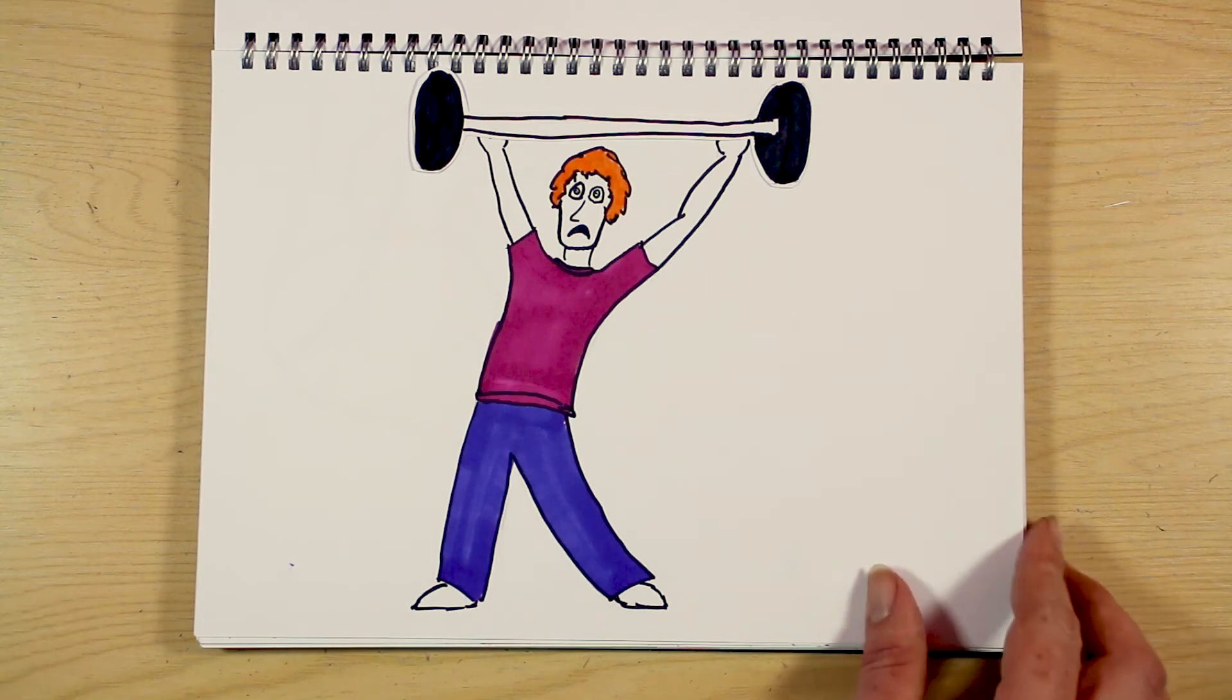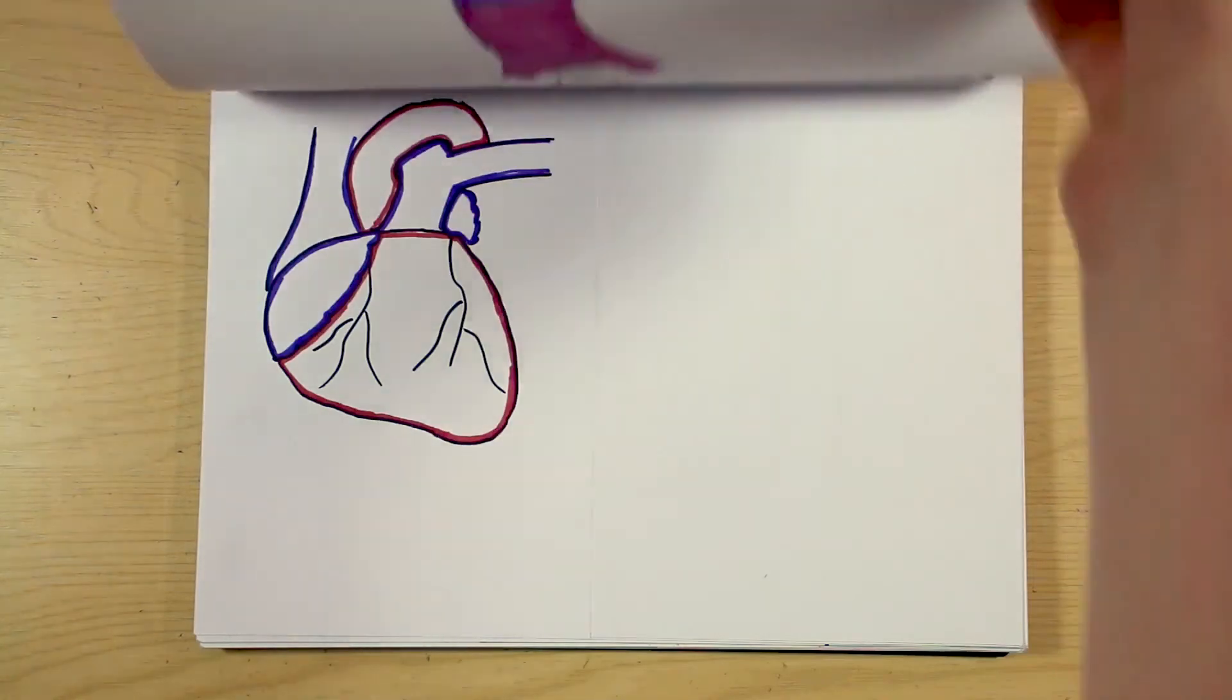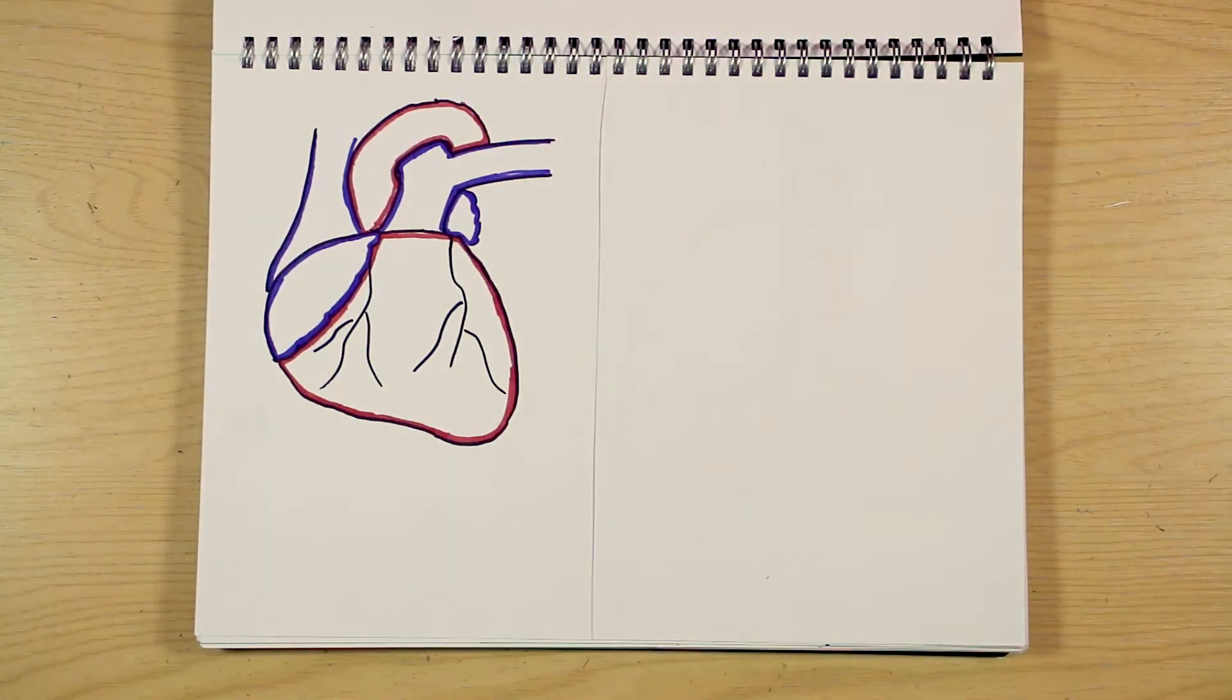After your organs and tissues have extracted oxygen from the blood, it flows back to the heart, through your veins, and enters the right atrium, passes through the tricuspid valve, and into the right ventricle.